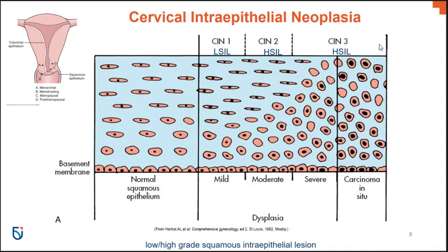CIN 3 does not necessarily indicate cancer. If it were to metastasize — so somebody had carcinoma in situ and it invaded the basement membrane and spread — some of the likely locations of metastases would include the ureters of the urinary system, the lateral pelvic walls, the vagina, and the uterus: areas that are relatively close to where the cervical cancer exists.